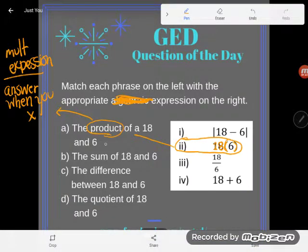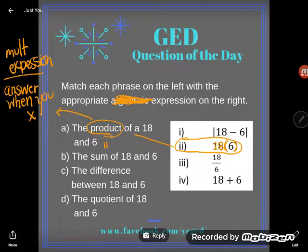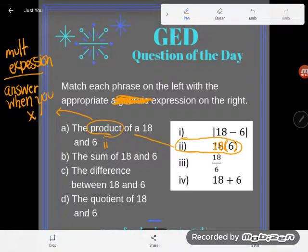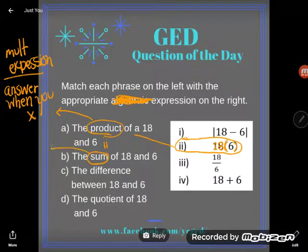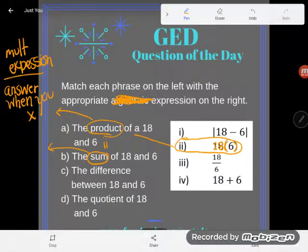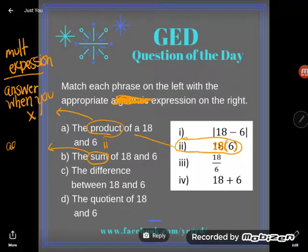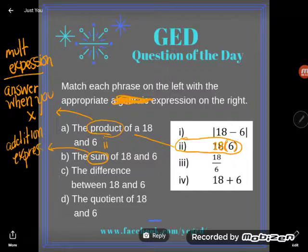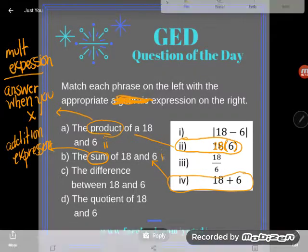Okay, now hopefully most of us know the word sum. I have a lot of students who scream out total. Careful, a sum is one kind of total, but there's more than one way to find a total. The sum is an addition expression or the answer when you add. In this one I'm looking for 18 and 6 to be summed, to be added together. That's definitely iv. We see 18 plus 6. B pairs with number 4.